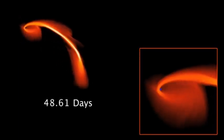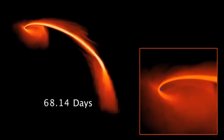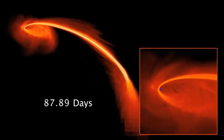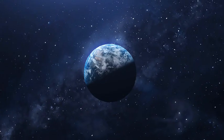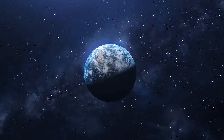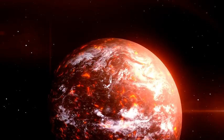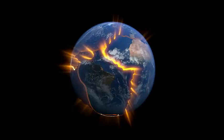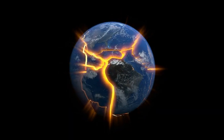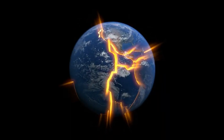It meant black holes could hold onto material for years before suddenly unleashing it in violent outbursts. Could such an outburst threaten Earth? The chances are extremely small, but not zero. If one of these narrow jets happened to be aimed directly at us, it could strip away atmospheres or disrupt ecosystems.